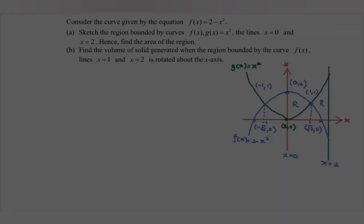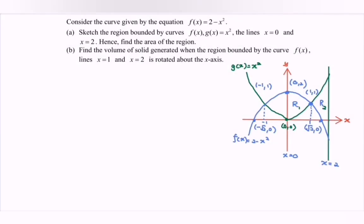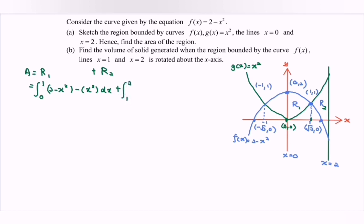Next we are going to find the area. Region number 1 is from 0 to 1, and region number 2 is from 1 to 2. For region 1, the blue curve f(x) is on top, so we integrate from 0 to 1: (2 minus x squared) minus x squared. For region 2, the green curve g(x) is on top, so we integrate from 1 to 2: x squared minus (2 minus x squared), with respect to x.